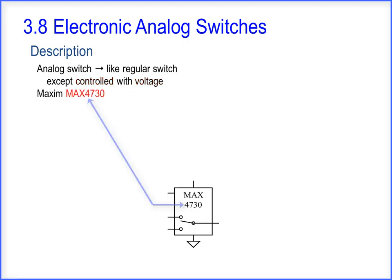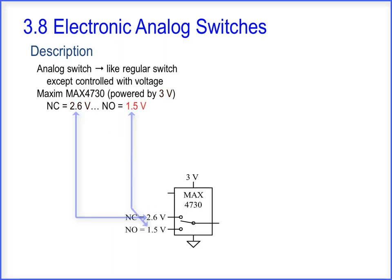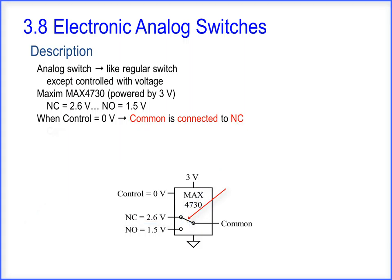We'll use a Maxim MAX4730, powered by 3 volts. We'll set NC to equal 2.6 volts, and set NO to 1.5 volts. When control equals 0 volts, common is connected to NC. Common equals 2.6 volts.